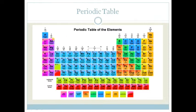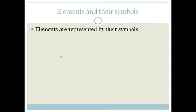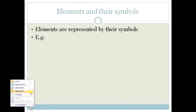If you look carefully at this periodic table, you can see different letters like H, Li, and Mg. These are the symbols for the elements, so elements can be represented by their symbols.